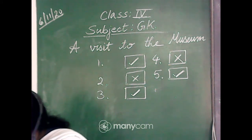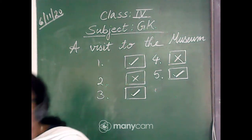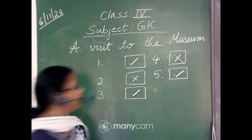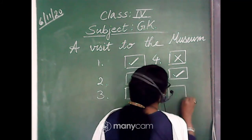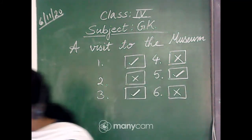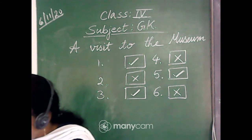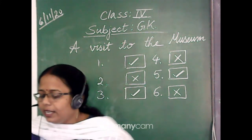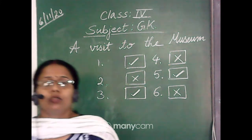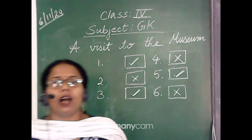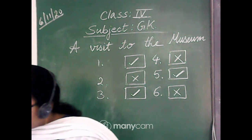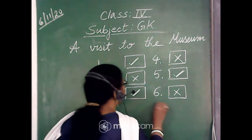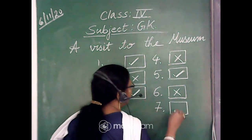The sixth statement is: the museum is open from 10 a.m. to 3 p.m. on Saturday. This is wrong — those are the Sunday timings, not Saturday. So statement six is crossed. The seventh statement is: the dinosaur could fly when it was alive. Looking at the photograph in the museum, we can see the dinosaur has wings, so this was a type of dinosaur that used to fly. Statement seven is correct — we put a tick.